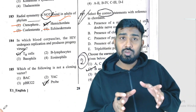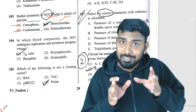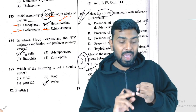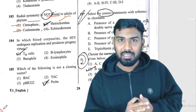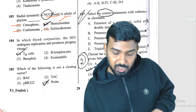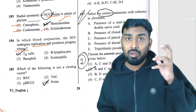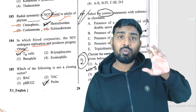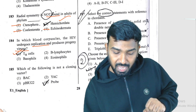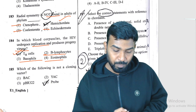Question 184: HIV attacks cells with CD4 receptors. CD4 receptors are present on macrophages and T-helper cells. The question asks in which blood cells HIV undergoes replication and produces viral particles. The answer must include macrophages and T-helper cells — so T-helper cell is the correct option.